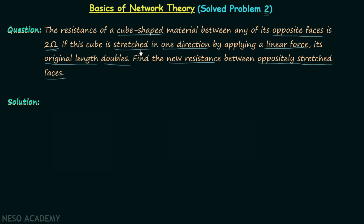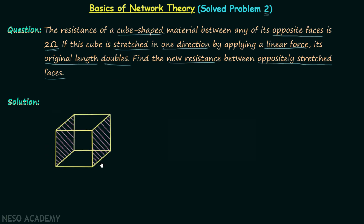According to the problem, we have a cube-shaped material. The resistance between its opposite faces is equal to 2 ohms. For our analysis, we will take these two faces and let's say the resistance between these two faces is R1, which is equal to 2 ohms.